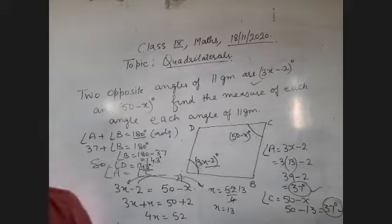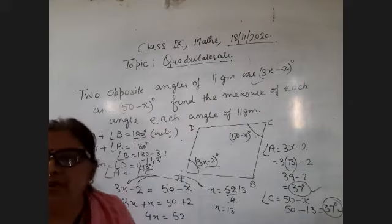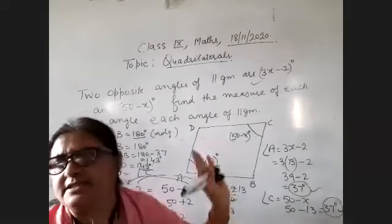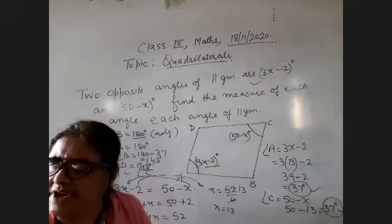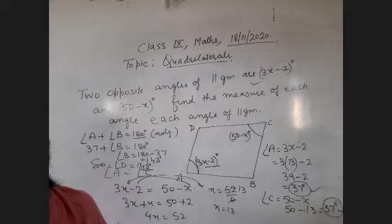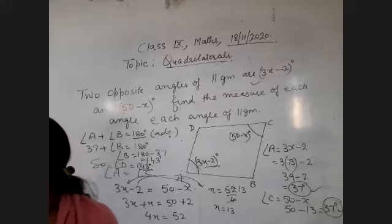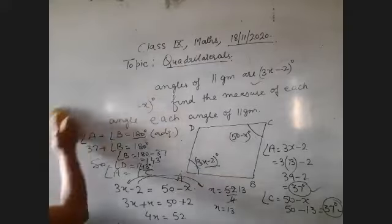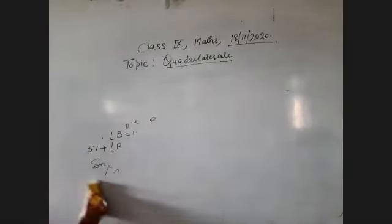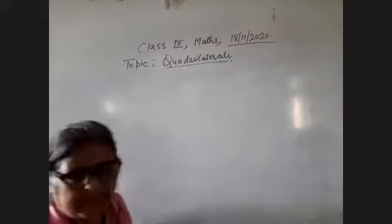Now note down the next question. This is a two-mark question. Never write the answer without showing solution — students directly write the answer in rough and just write: A is 37, C is 37, B is 143, D is 143. That is not acceptable — you have to write the complete solution. All these questions should be in your notebook.